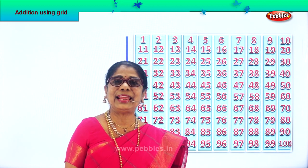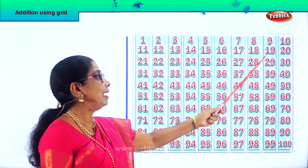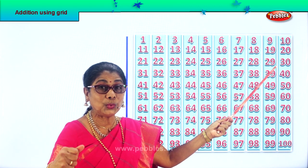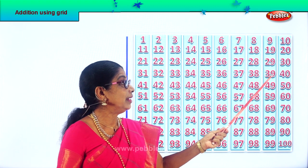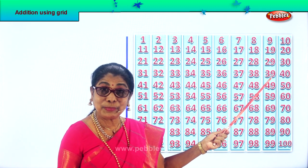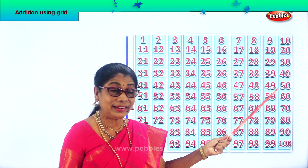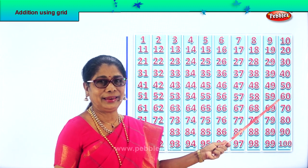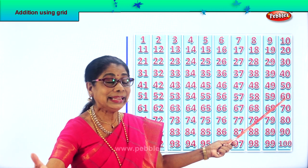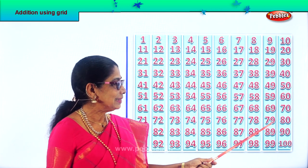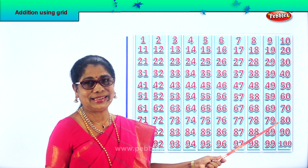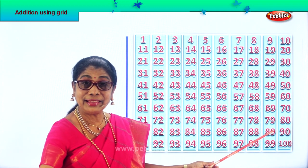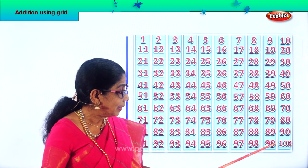Number 9. 10 plus 9? 19. 19 plus 10? 29. 29 plus 10? 39. 39 plus 10? 49. 49 plus 10? 59. 59 plus 10? 69. 69 plus 10? 79. 79 plus 10? 89. 89 plus 10? 99.